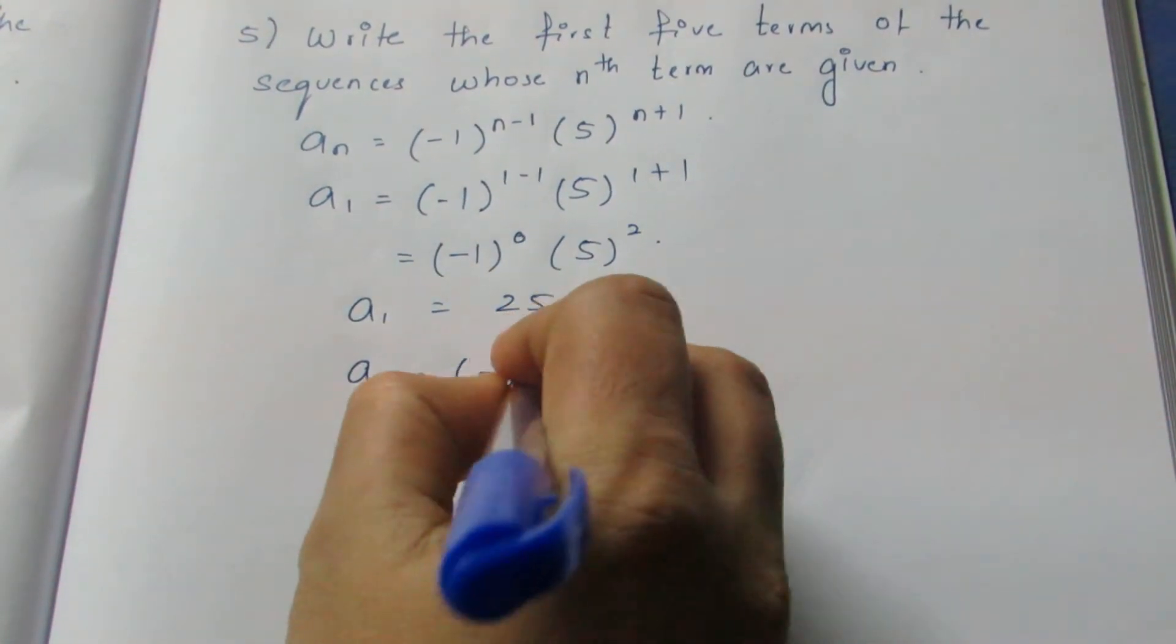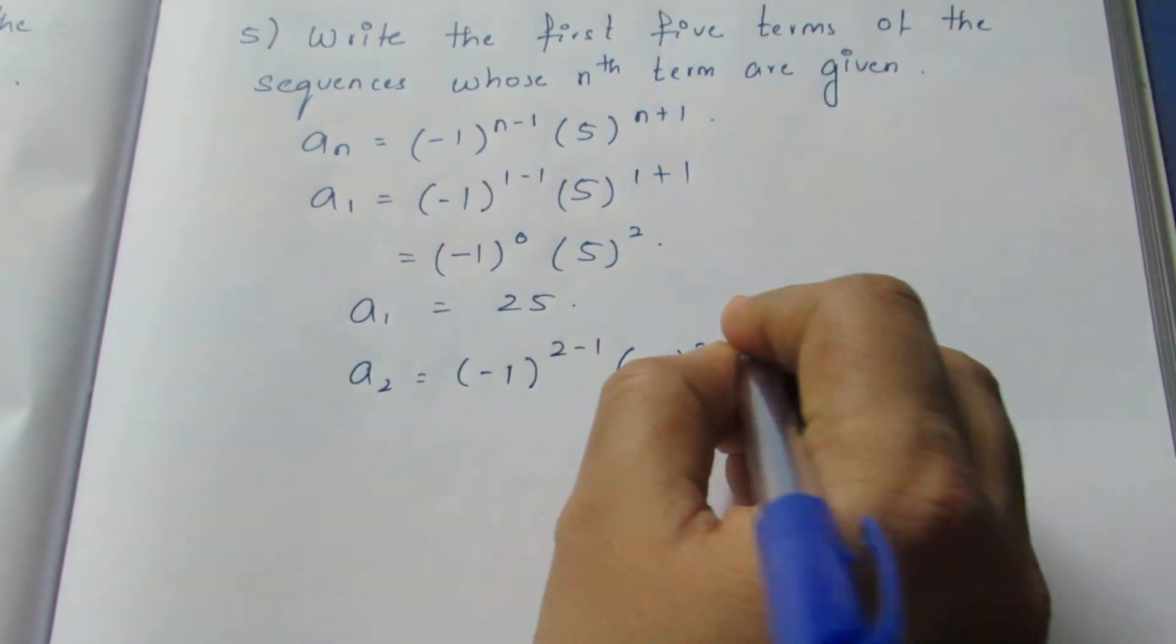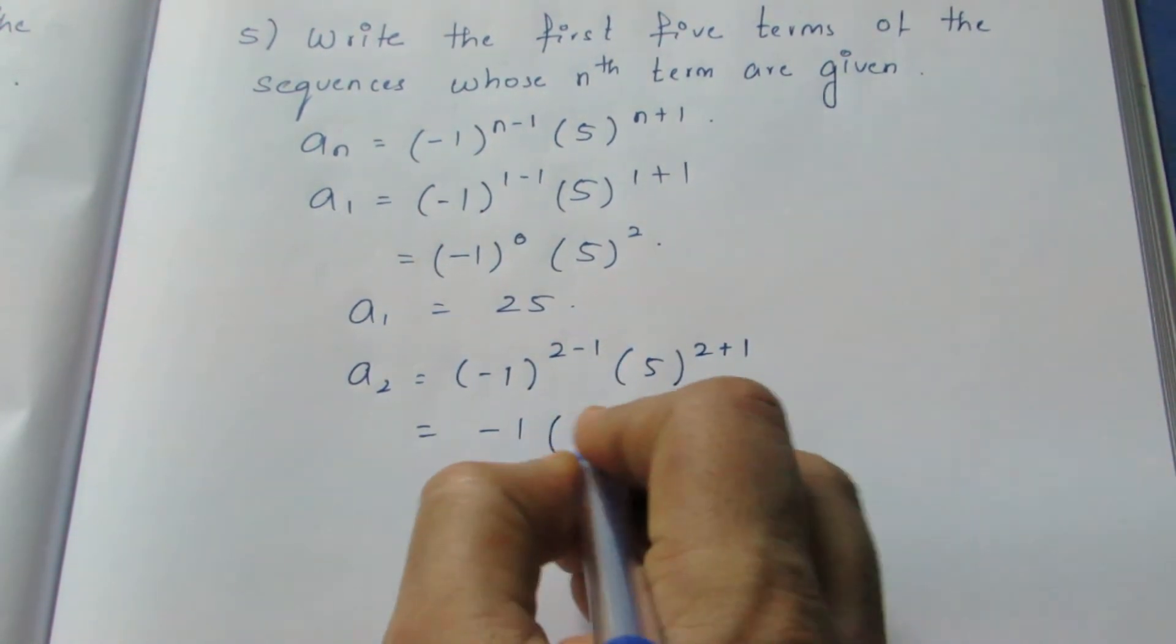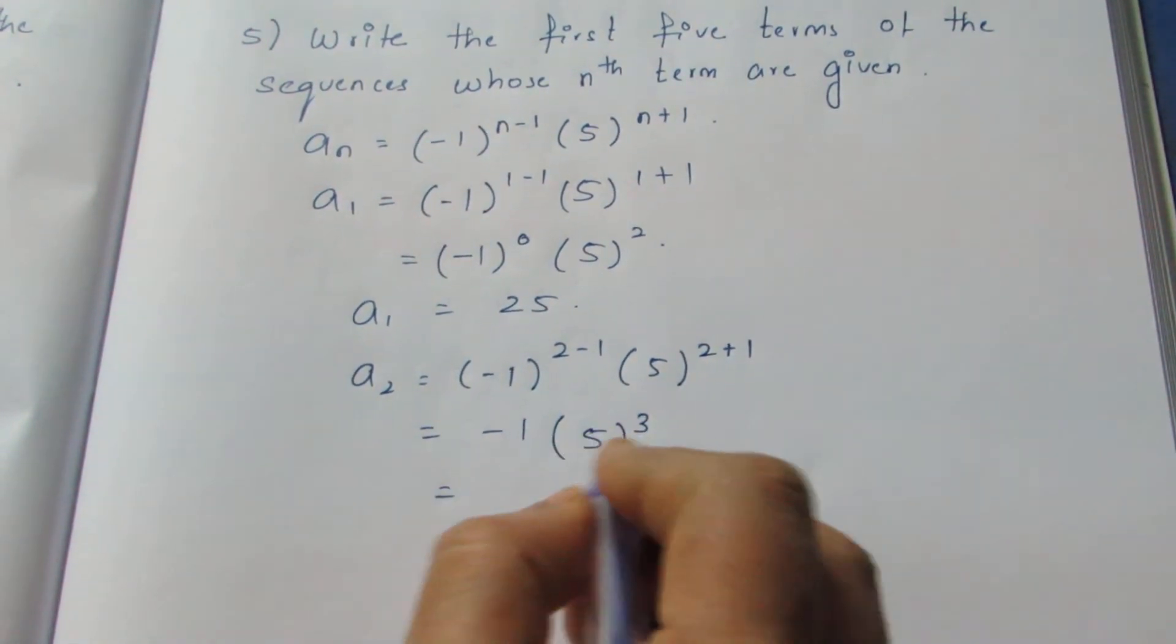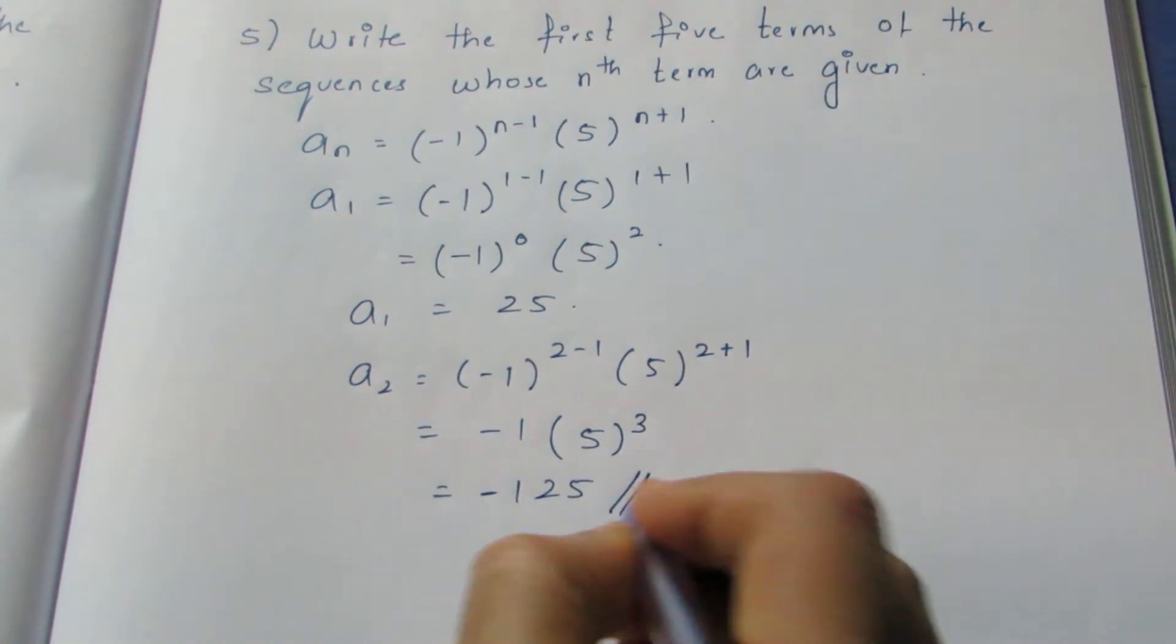a_2 similarly: (-1)^(2-1) times 5^(2+1). Here becomes (-1)^1 times 5^3. This becomes 125 into -1, which will become -125.